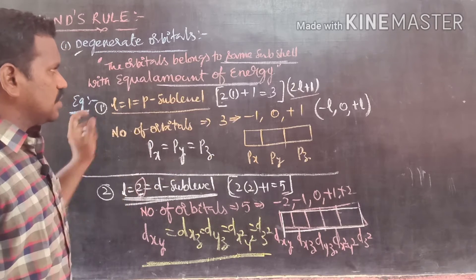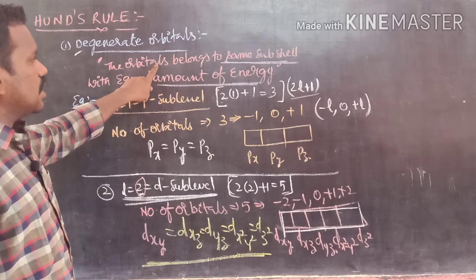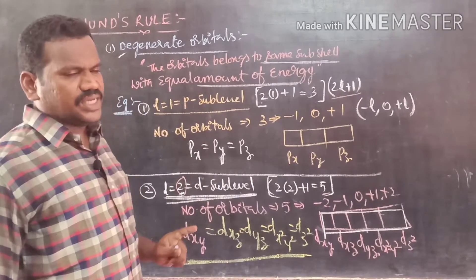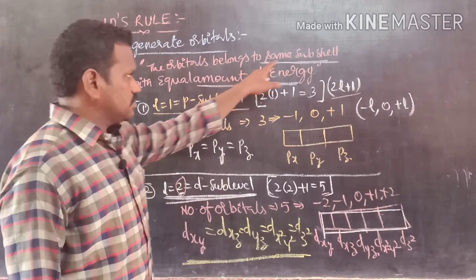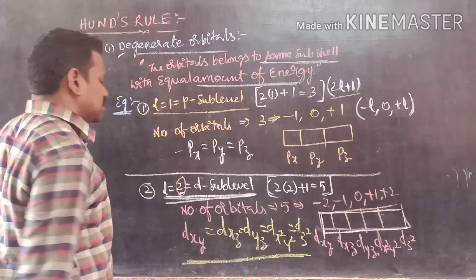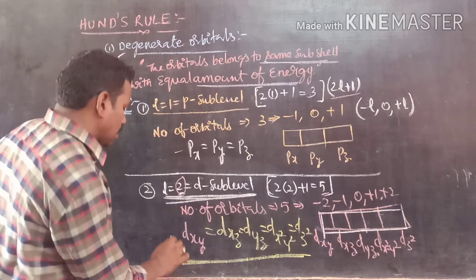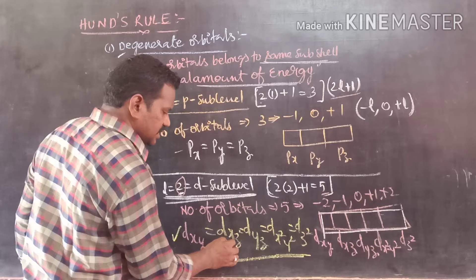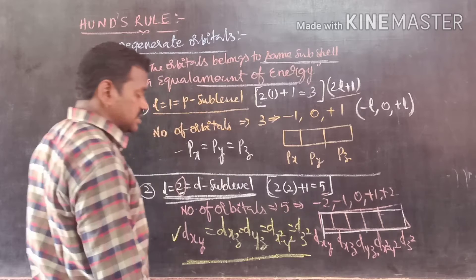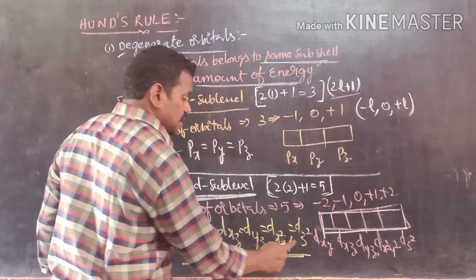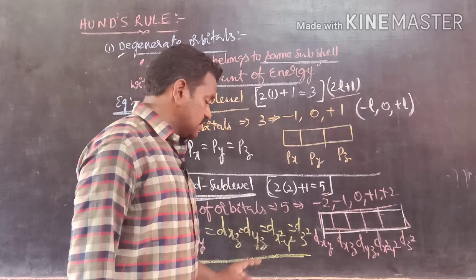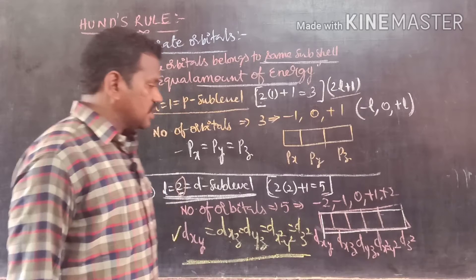From this explanation, we can understand the definition: orbitals belonging to the same subshell — whether P, D, or F — with equal amounts of energy are called degenerate orbitals. Examples are Px = Py = Pz, or Dxy = Dxz = Dyz = Dx²y² = Dz², because they are located along particular axes.